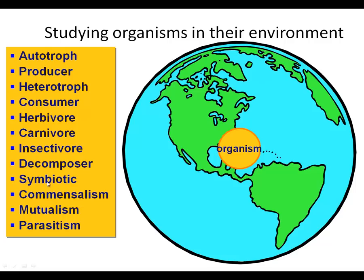Symbiotic organisms actually work together for a common good. We can have commensalism, where they go together and they don't really benefit from it or get harmed. We have mutualism, where at least one gets help — probably both. And we have parasitism, where one of them actually gets the good stuff and the other one has to pay for it.